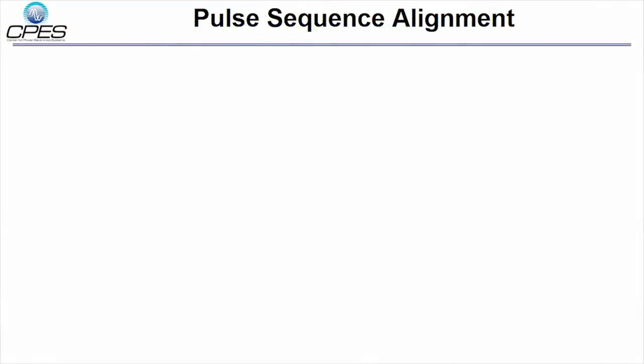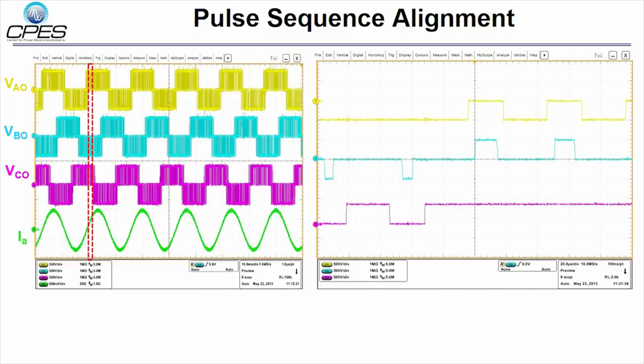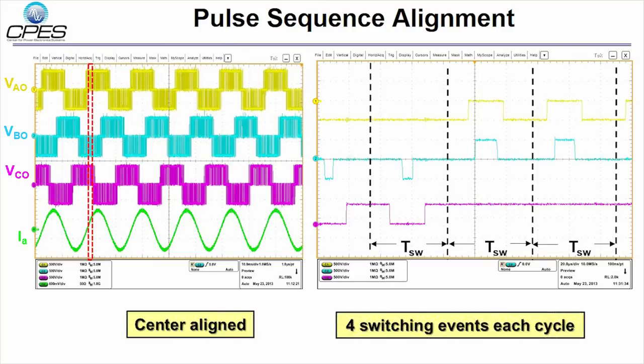The 3-phase output voltage waveform is also observed. By zooming in this waveform to several switching cycles, the pulse sequence alignment can be clearly identified. In each switching cycle, the pulse sequence is center aligned and also there are only 4 switching events in each cycle, which is the desired switching pattern as we mentioned before.